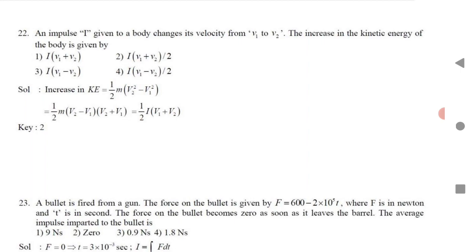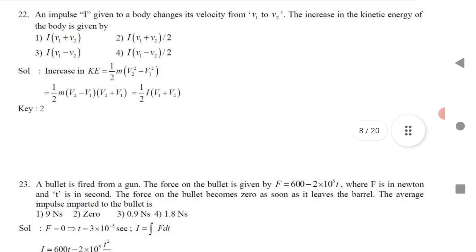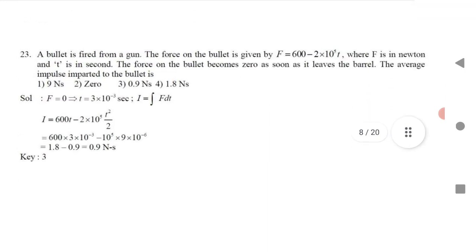Question 14: An impulse I given to a body changes its velocity from v₁ to v₂. To find the increase in kinetic energy: ΔKE = ½m(v₂² − v₁²). Factor using the difference of squares: (v₂ − v₁)(v₂ + v₁). Since v₂ − v₁ = I/m (impulse), substitute I in place of m(v₂ − v₁) to get the answer.